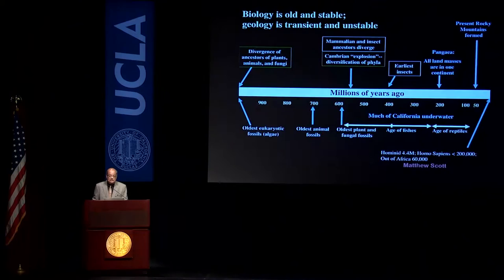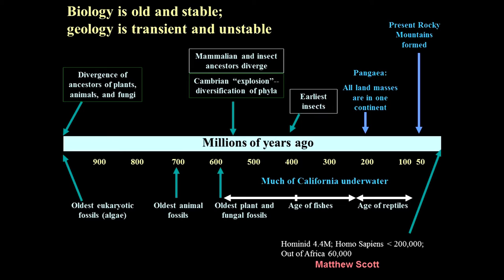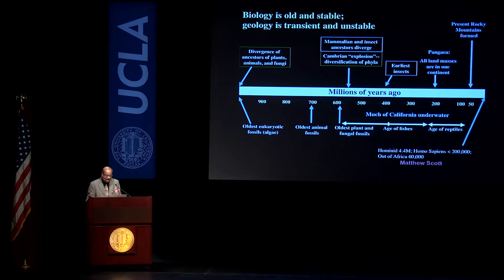Even though the gene numbers are similar, one could argue that maybe they are a non-overlapping set — that a new group of genes evolved in humans. But that is something any scientist will tell you is not possible because of the evolutionary history from which we have been derived.